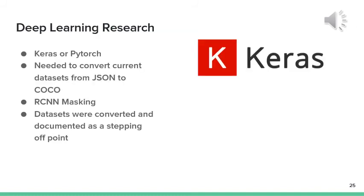After cascading classifiers were determined to not be a viable solution, we explored deep learning algorithms. We learned that Keras or PyTorch were going to be good libraries to explore. We decided that Keras would be the one we move forward with. First, we needed to convert current data sets from our JSON formatting to a COCO formatting. Using this library, we attempted CNN masking to accomplish our goal. Ultimately, we ran out of time and had to pivot to more documentation to finish out the project. The data sets were converted though as a stepping off point for whoever picks it up after us.